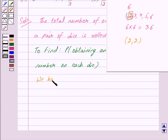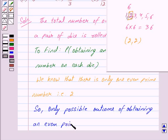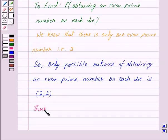We know that there is only one even prime number, that is 2. So the only possible outcome of obtaining an even prime number on each die is (2, 2). Thus, the probability of obtaining an even prime number on each die...